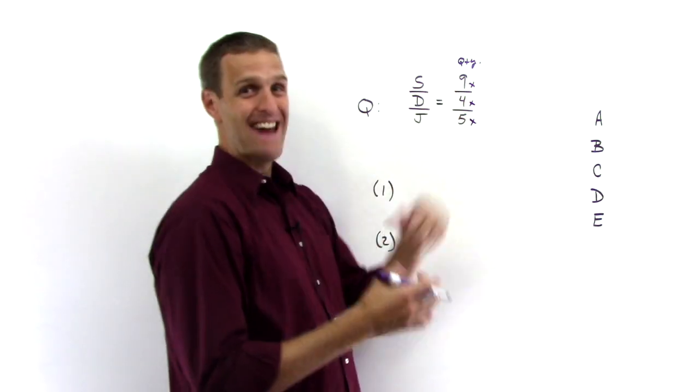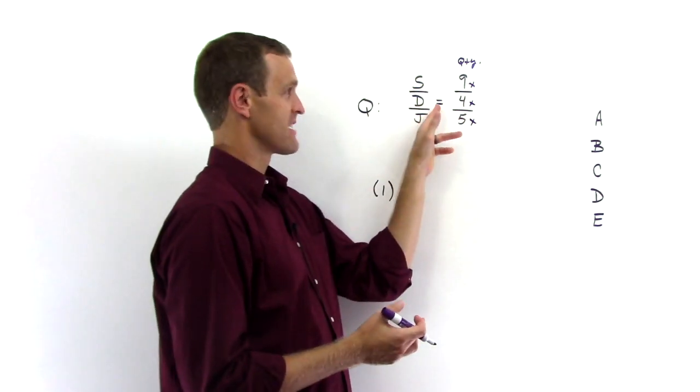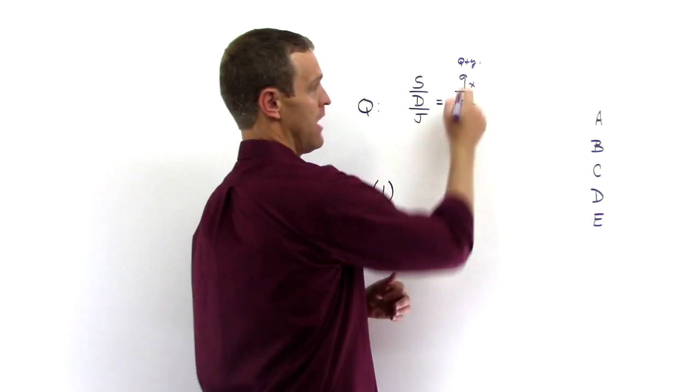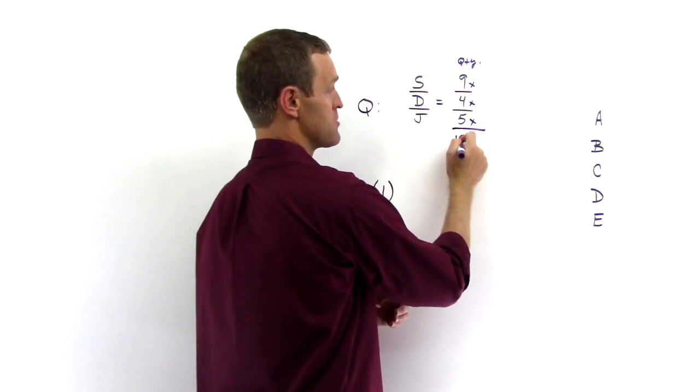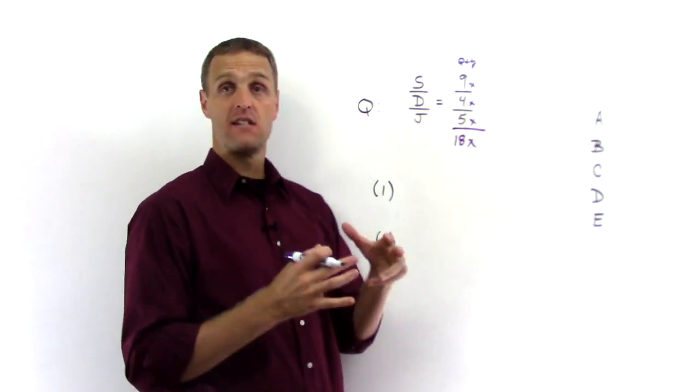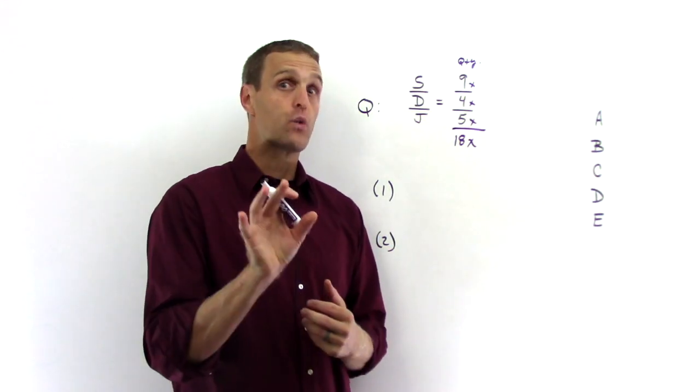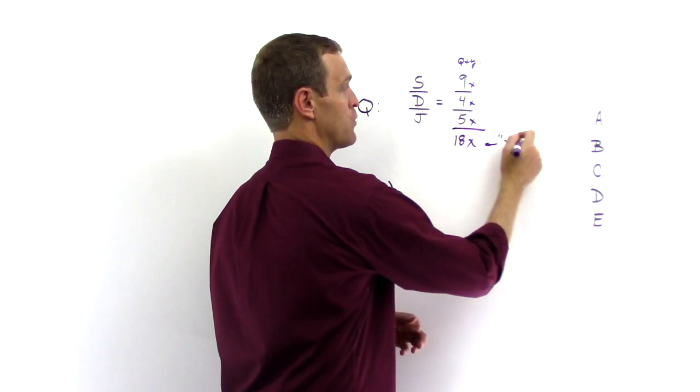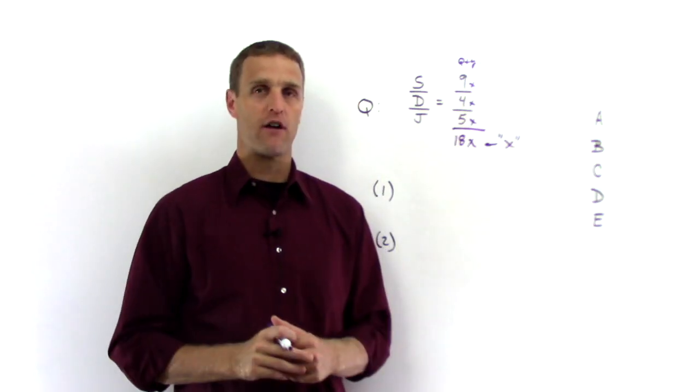So we have 9X actual shirts, 4X actual dresses, 5X actual jackets for a total of 18 parts. So the actual answer to the question is, how many do we have total? We have 18X total. So really to answer the question, we just need X. The question really is, what is X? What is the multiplier effect?